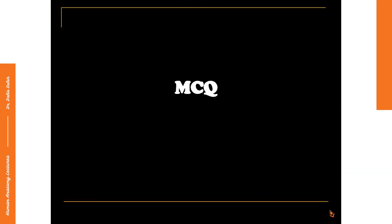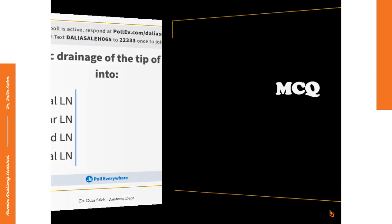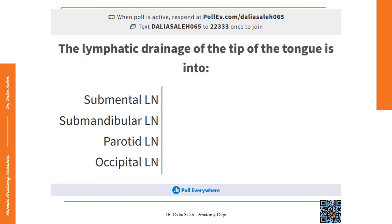Now let's try to solve this MCQ question: the lymphatic drainage of the tip of the tongue is into which of the following — submental lymph nodes, submandibular lymph nodes, parotid lymph nodes, or occipital lymph nodes? Please scan the code below and drop your answer.